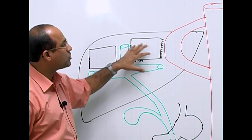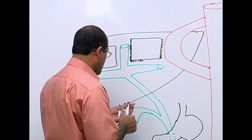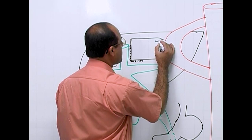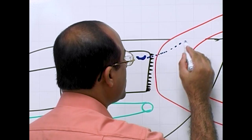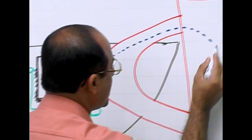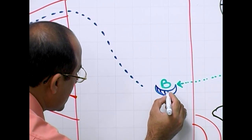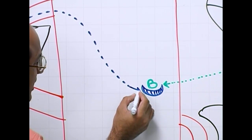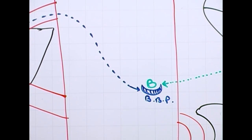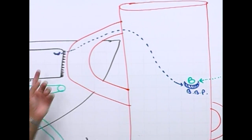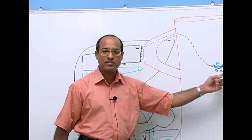One function of the hepatocyte is to secrete special proteins into circulation. Once these proteins enter circulation, their major function is that as soon as bilirubin comes out, these proteins will immediately bind with bilirubin. That is why they are called bilirubin-binding proteins. It is the duty of the hepatocyte to provide the circulatory system with such proteins, which act as bilirubin trappers.